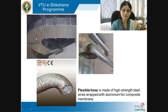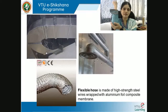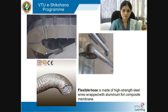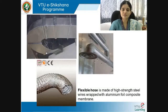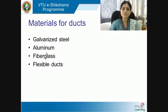When a rectangular duct makes a turn, it uses a smooth curved bend called an elbow — similar to the elbow of a hand. For duct materials we use galvanized steel, aluminum, fiberglass, and flexible ducts made of high-strength steel wires wrapped with aluminum foil composite membranes. The materials are decided based on requirements, budget, and efficiency expected.